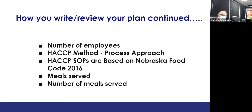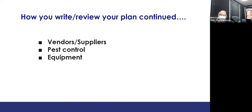List the number of meals served — enrollment may change each year so keep it updated. List your vendors and suppliers, and write down any time you change those. Include your pest control operator and ensure they are licensed. That way, when someone looks at your HACCP plan, they can see who the person is, that they are licensed, and how often they come.